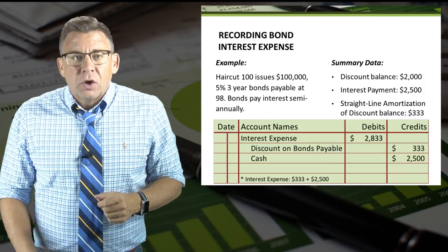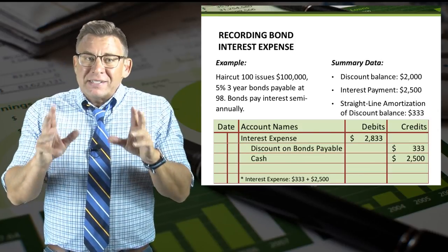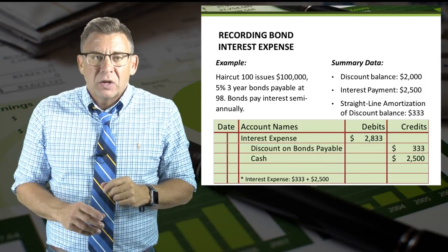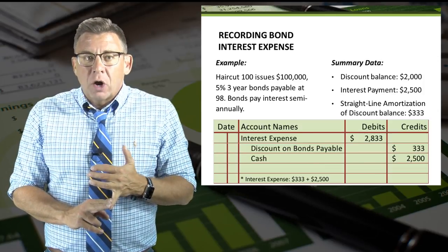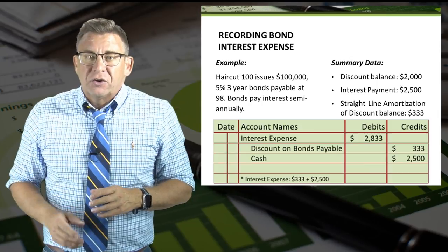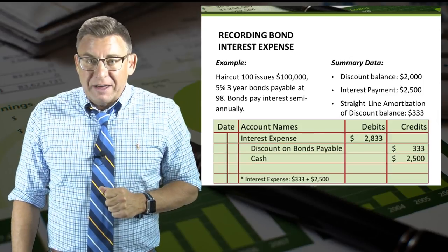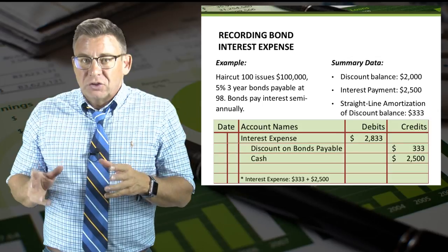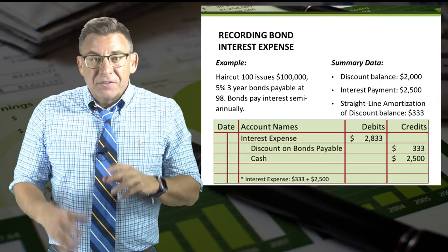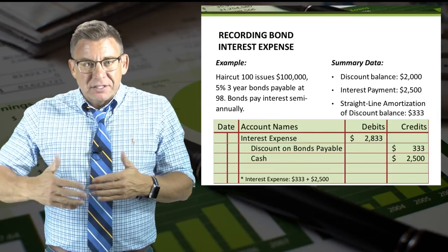The journal entry is as follows. We debit interest expense for $2,833, but this number is a plug number, so just enter the account name initially and then move on to the credits. The discount on bonds payable has a normal debit balance, so we need to credit it for the amount of amortization, which is $333. Cash is then credited for the amount of the interest payment to the bondholders, which is $2,500. Since the total credits equal $2,833, this is the amount that we debit interest expense. Since this is the straight-line method, this exact journal entry would be made every six months over the next three years.